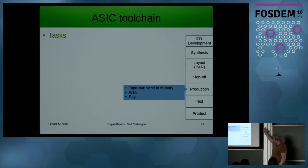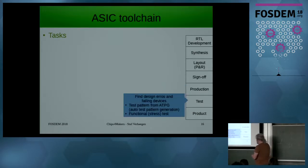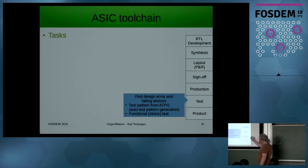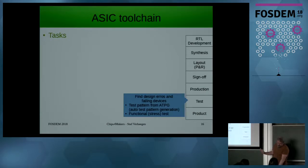After checking everything, you tape out to the foundry, wait a few months, pay, and then you get something back. Then you have to test. First you can do a functional test — just program it and run it to see if it works. They also test with ATPG — automated test pattern generation — running test patterns through the circuit to see if there are no shorts or opens, and there are tools to do that automatically.